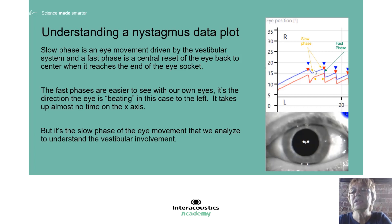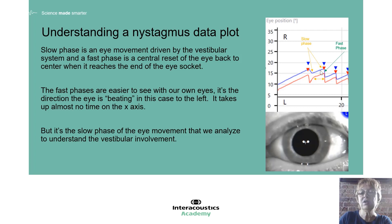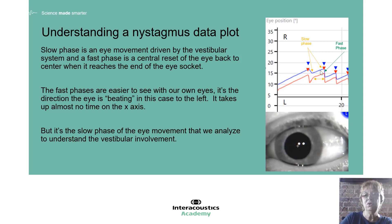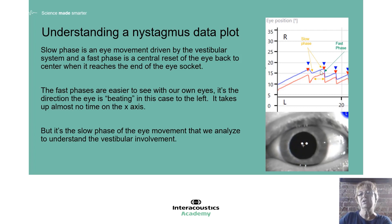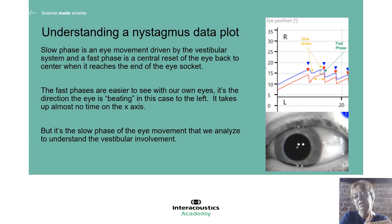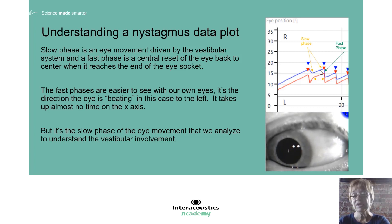The slow phase takes a long time because it's slow, but the fast phase happens very quickly to bring the eyes back to center. In this slow-motion video you can see the slow drift to the right and then a fast correction to the left — slow drift to the right, fast correction to the left — so it's a left-beating horizontal nystagmus.